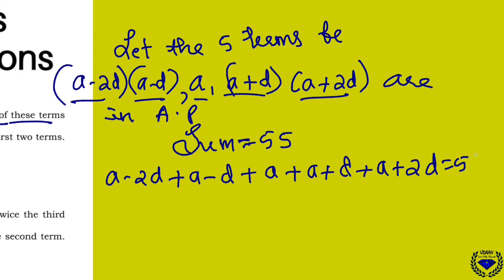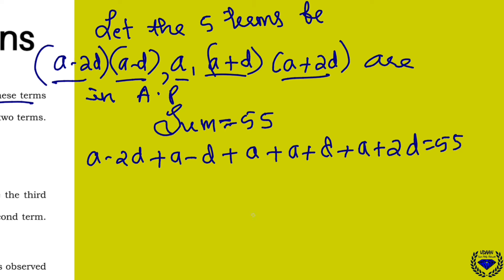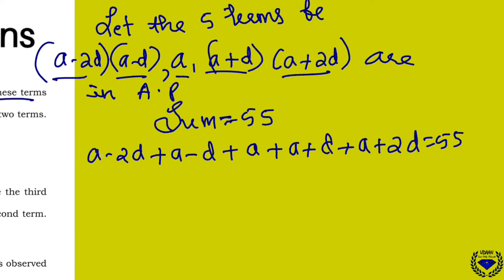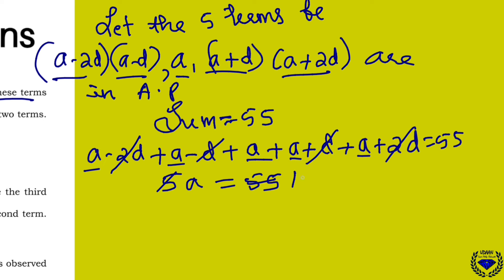Add all 5 terms and you will get 55. The plus 2D and minus 2D cancel, plus D and minus D cancel, leaving 5A equal to 55. So A equals 11.